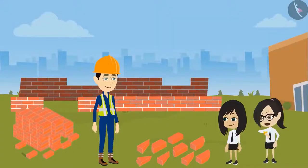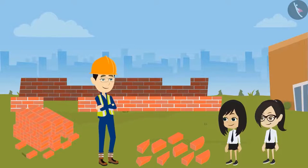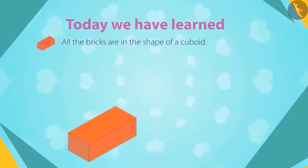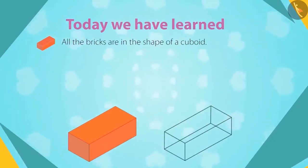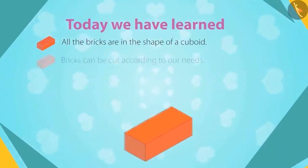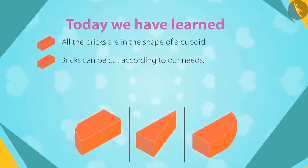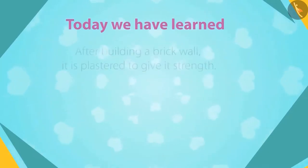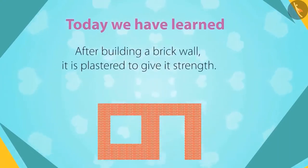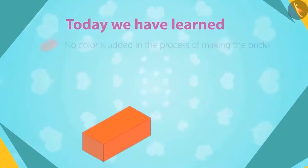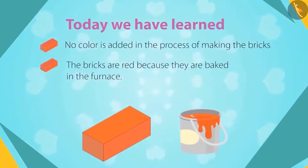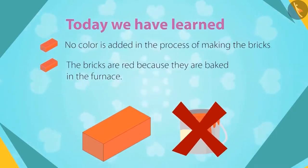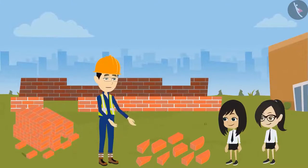Now I understand — I was thinking why they don't make colorful bricks. We have to go now, sir, our class is about to start. Sure, but first let's recall what you have learned today. All bricks are in the shape of a cuboid, which can be cut according to our needs — that is why we see bricks of other shapes like triangles or with curved sides. After building a brick wall, the wall is plastered to give it strength. No color is added in the process of making bricks — the bricks are red because they are baked in the furnace. Very good, Neha and Vandana. Now I think both of you know everything about bricks.